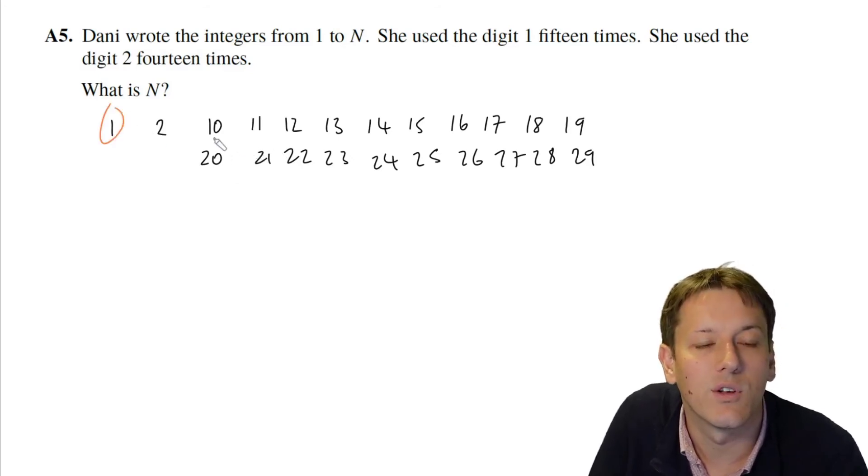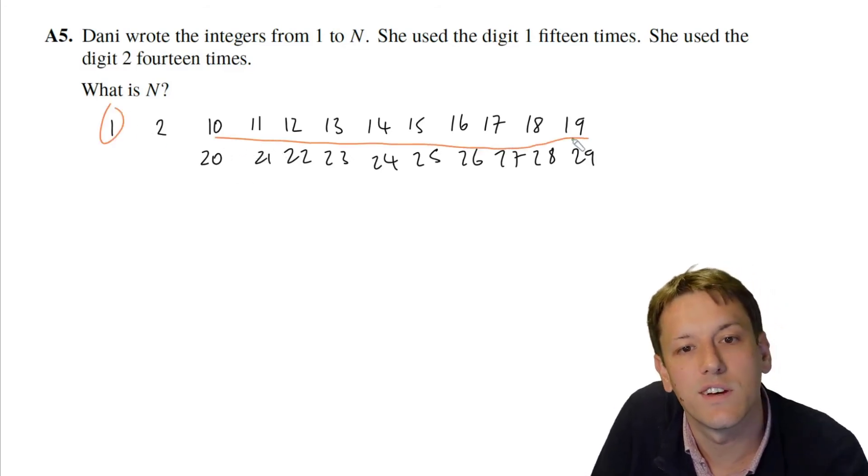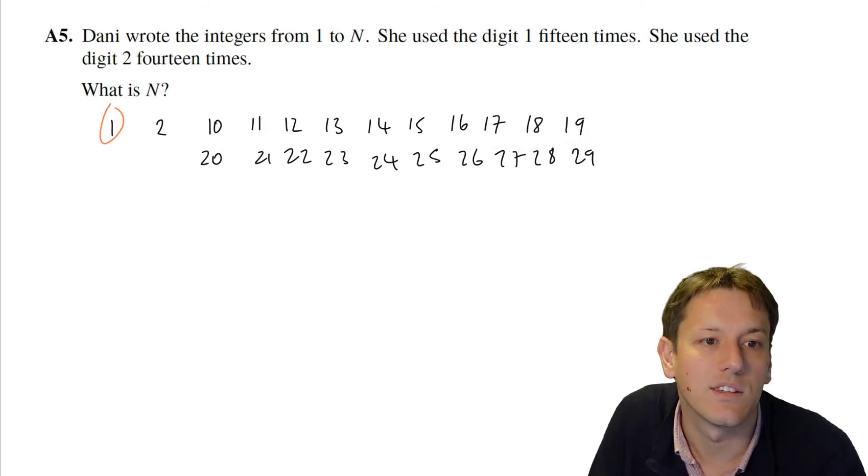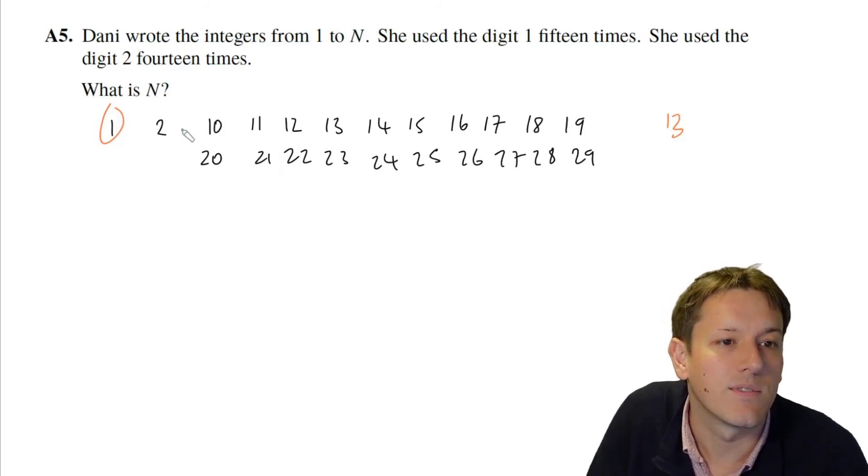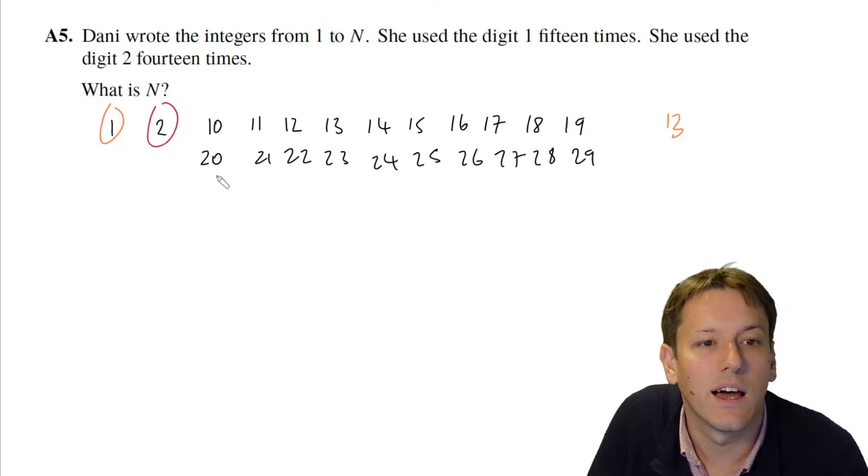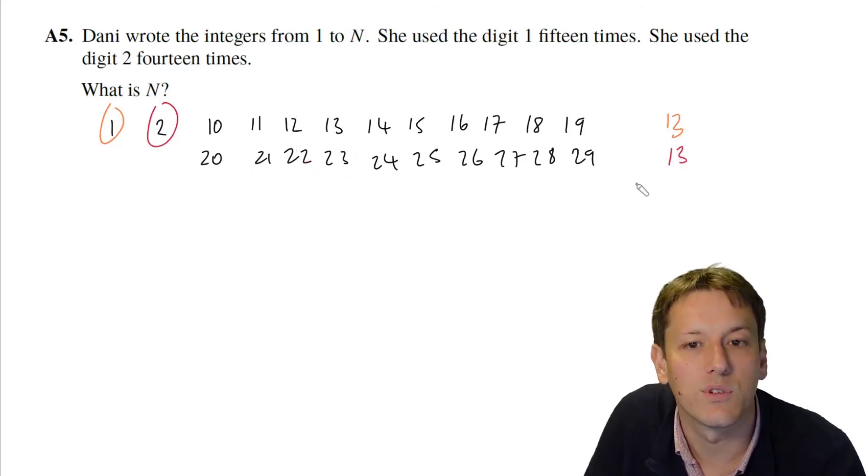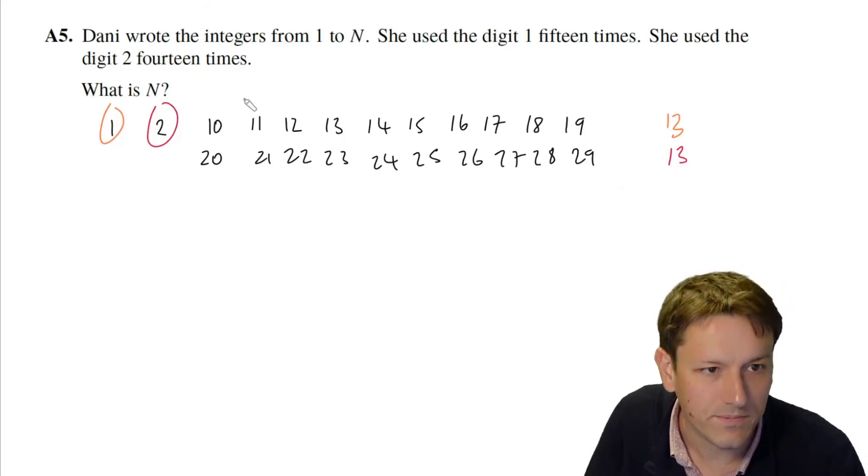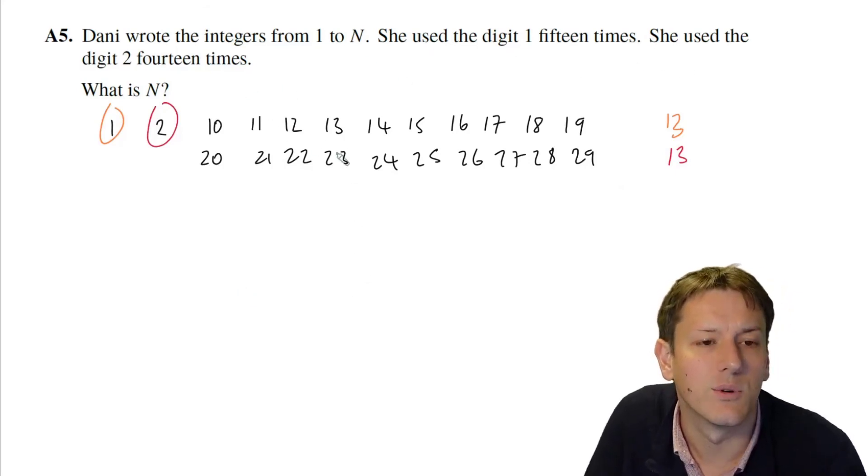So let's see how many ones and twos we've got so far. Well, I've got, in terms of ones, I've got the 1 here at the beginning, and then I've got another 10 ones for the first digits of these numbers, and another one for the second digit here. So there's 11 here, so that gets me to 12 ones in this row. And in this row I've got another one, so that's taking me up to 13. And the same for the twos—I've got 2 here, and I've got 10 twos here, and I've got an extra two here and here. So at this point I've also got 13 twos. So we're almost up to 14 and 15.